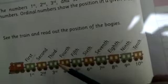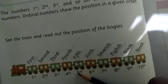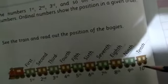And the numerical sign of first is 1st, 2nd, 3rd, 4th, 5th, 6th, 7th, 8th, 9th, and 10th.